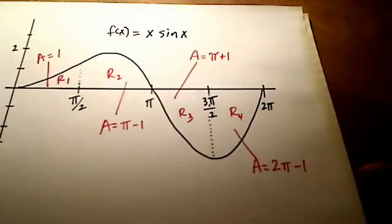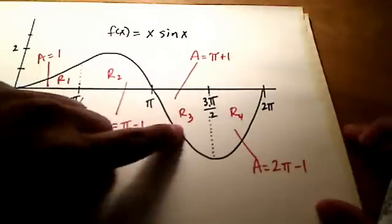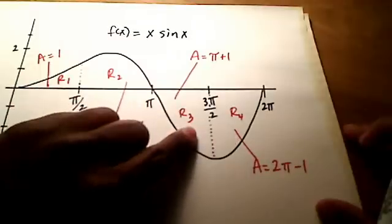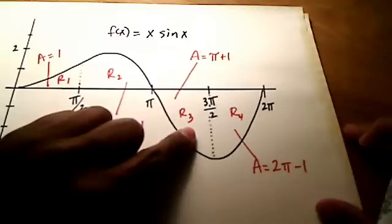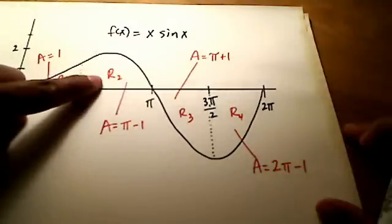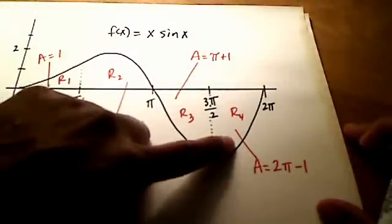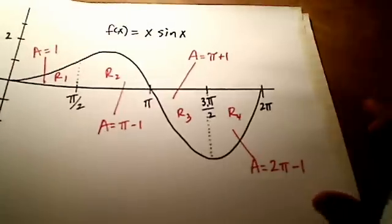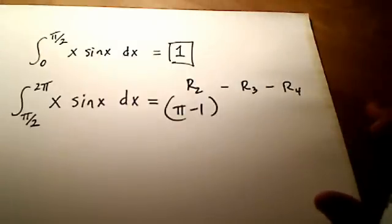Now when I say this has a positive area and these guys have negative areas, I'm talking about net area. If it asked what is the total area, I would simply add these three up. So there's a difference between net and total area. Keep those two things straight.